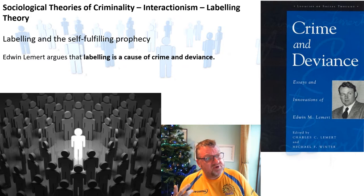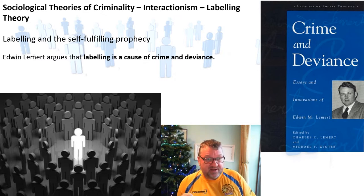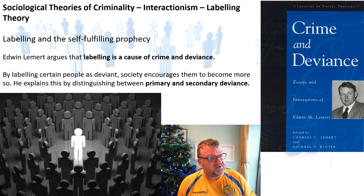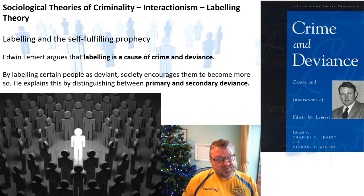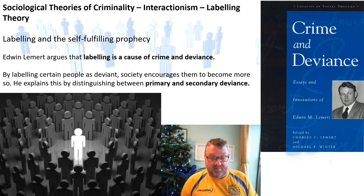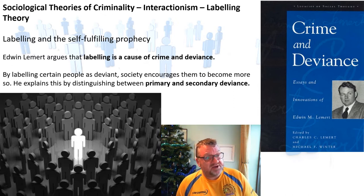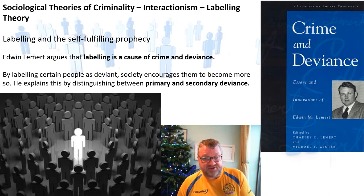This moves us on to labelling and the self-fulfilling prophecy. Edwin Lemert says that labelling is a cause of crime and deviance. By labelling certain people as deviant, society encourages them to become more so — more deviant. He explains this by distinguishing between primary and secondary deviance.